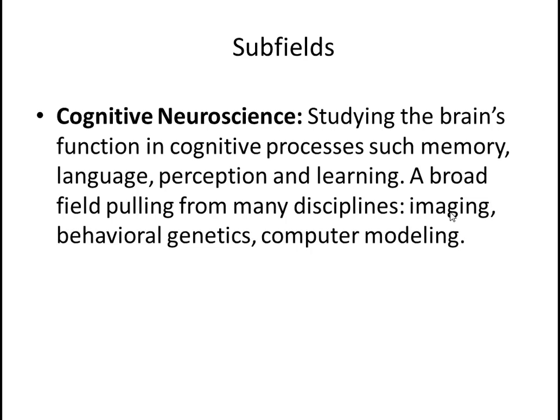Let's look at some subfields — and there are a lot. Each subfield of biopsychology has its own journals and conferences. I want to use the word neuroscience here. Neuroscience is a blanket term for any field really looking at the nervous system and its effects — from how it works, to things that go wrong in neurology, to how it affects behavior and cognition. Neuroscience is really the buzzword these days, and this class is really about an introduction to behavioral neuroscience.